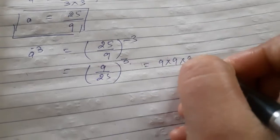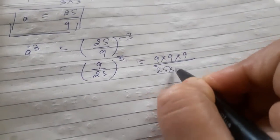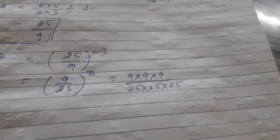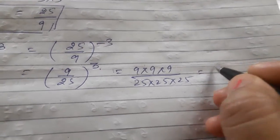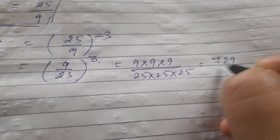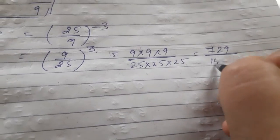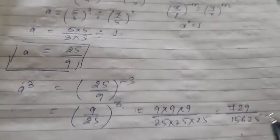And then 9×9×9/(25×25×25). Then cube of 9 will be equal to 729, and cube of 25 will be equal to 15625.